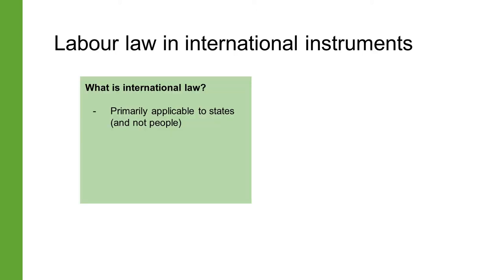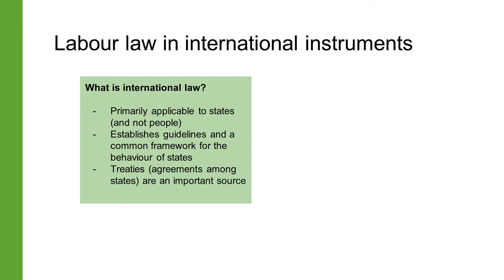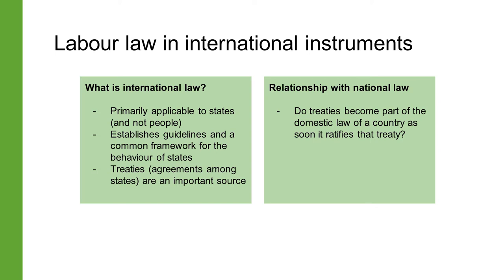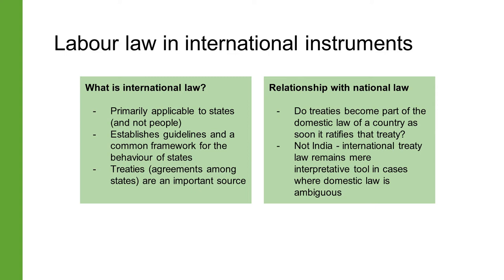International instruments are primarily applicable to countries and not directly to the people of those countries. Public international law establishes guidelines and a common framework to guide the behavior of states. Treaties are a principal source of international law—these are written agreements among states. In several countries, treaties become part of domestic law as soon as they are ratified. India is not one of those countries; usually in India, international treaties even after ratification are only an interpretative tool where domestic law is ambiguous.